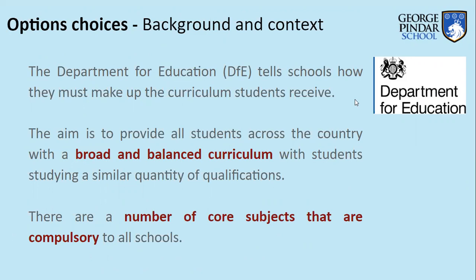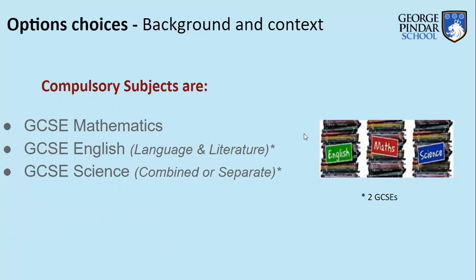The Department of Education has strong input into the subjects we offer. They insist that we provide a broad and balanced curriculum and that students across the country study similar qualifications. There are a number of core subjects that all schools and all students must study, so that everyone comes out of up to 16 years of education with the same subject backgrounds.